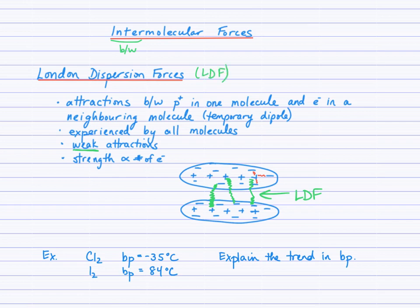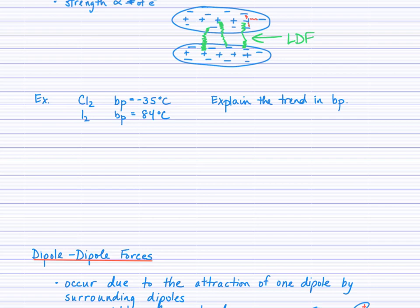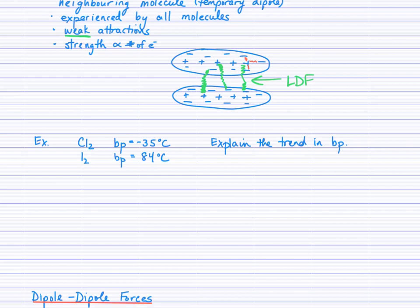As an example, here are the boiling points of chlorine and iodine. These are both diatomic elements, and you'll notice that the boiling point of chlorine is quite a bit lower than the boiling point of iodine. The strength of the London dispersion force varies with the number of electrons. Iodine has a boiling point up at 84 degrees Celsius, much higher than chlorine's. We'll see if we can explain why iodine has a much higher boiling point.